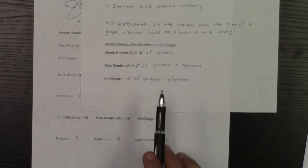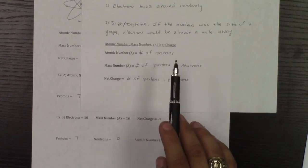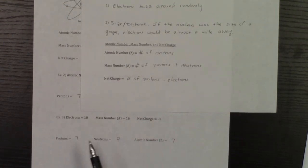And then as for my atomic number, your atomic number just is the number of protons. So that's why my atomic number is also seven.